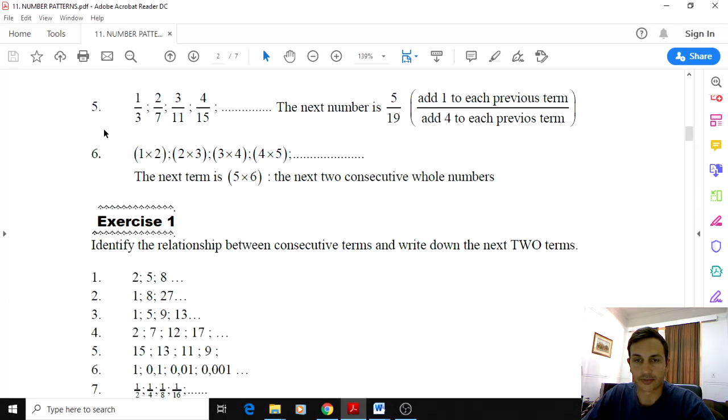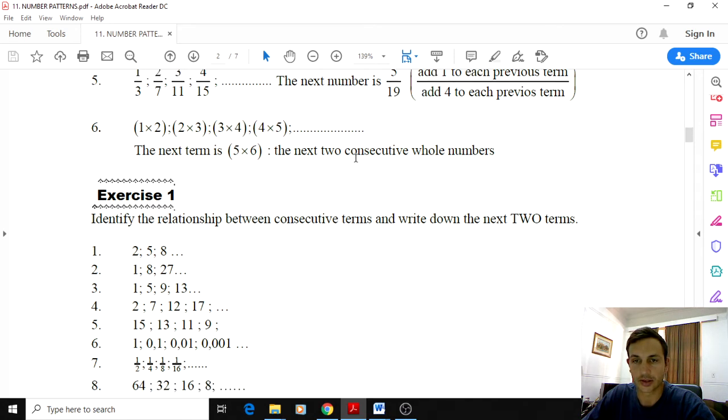Here we just have some fractions, makes it a little bit more interesting. We see the numerator adding 1 every time, going from 1 to 2 to 3 to 4. The denominator starting with 3 and adding 4 every time. So it shows you add 1 to the numerator every time and then add 4 to the denominator.